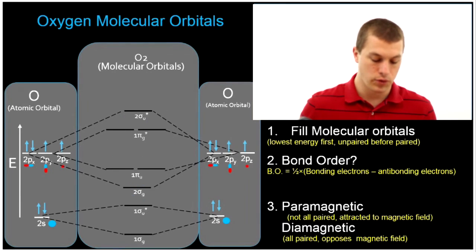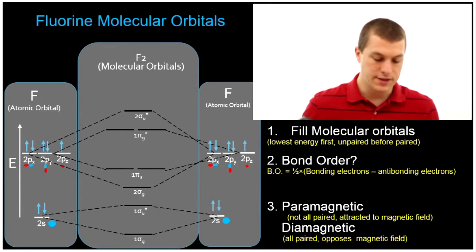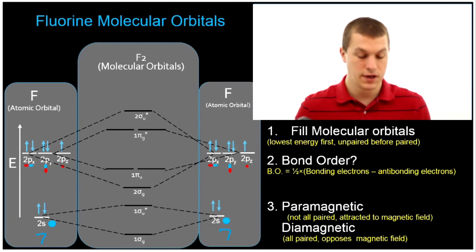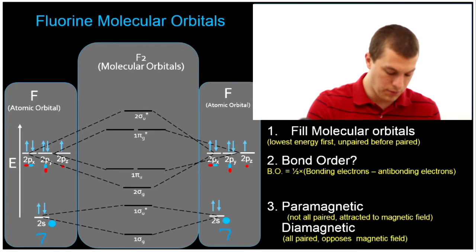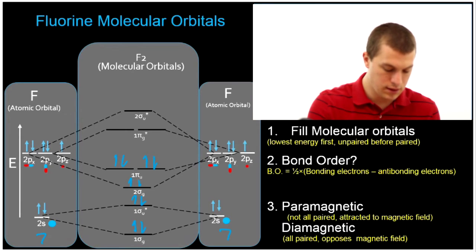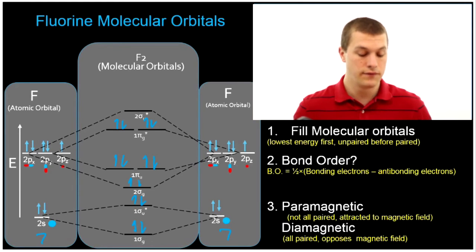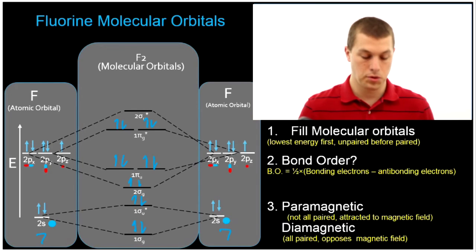Let's take a quick look at doing fluorine — a very similar process. We count up how many valence electrons we have on each side, which in this case is going to be seven for both fluorines. Then we fill up our molecular orbital diagram, counting through electrons one through fourteen. We had a total of fourteen electrons — seven valence from each fluorine — and we've filled them all up in our molecular orbital diagram.